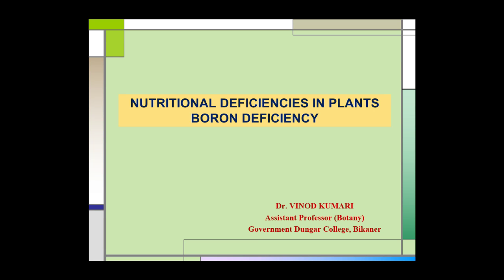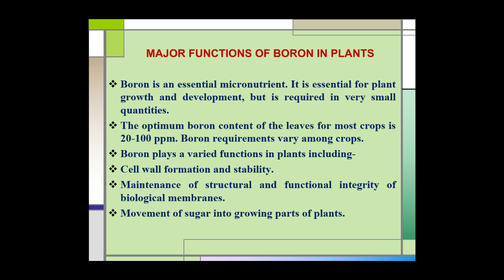Nutritional deficiencies in plants. Under this topic today we are going to study about the boron deficiency in plants. In this e-lecture we are going to study about the major functions of boron in plants, deficiency symptoms, soil conditions that affect boron availability to plants, and management of boron deficiency in plants. Let us start with major functions of boron in plants.